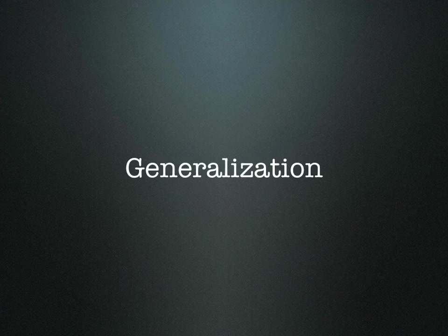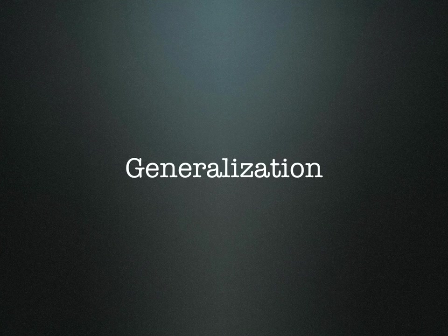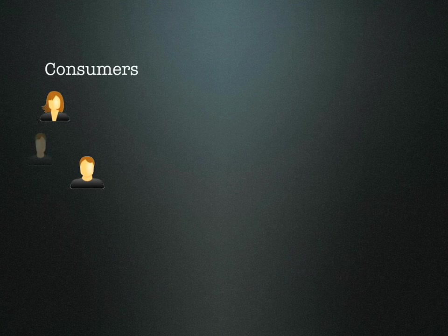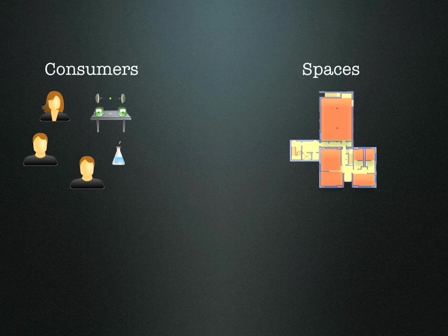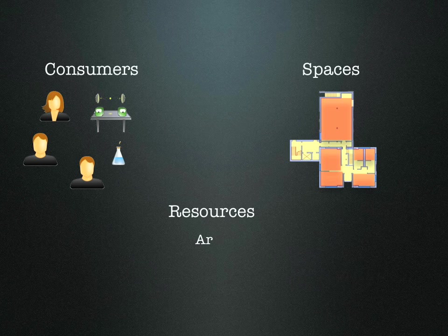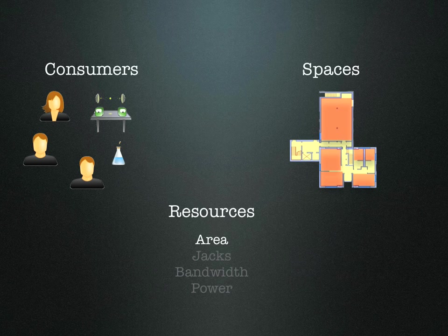In order to make the model as flexible as possible, it needs to be as general as possible. The first generalization is to refer to any person or function that consumes space as a consumer. This could be a laboratory, a conference area, etc. Similarly, both technical and office areas are simply referred to as space. Resources are what bind the two together. Consumers have requirements for them, and the spaces can provide them. The most common resource is, of course, area, but additional resources can be modeled like communication jacks, bandwidth, power, etc.